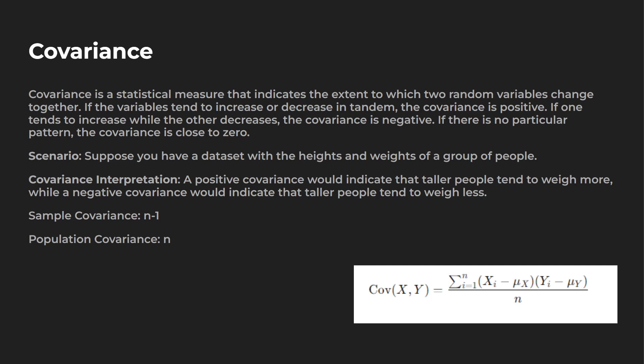So I wanted to make a pretty easy example on this one. Suppose we have a dataset with the heights and weights of a group of people. A positive covariance would indicate that taller people tend to weigh more, which is true. A negative covariance would indicate taller people tend to weigh less, which is not true. And also two terms to know — sample versus population. I've covered it in some of my other videos, but it does apply to covariance.